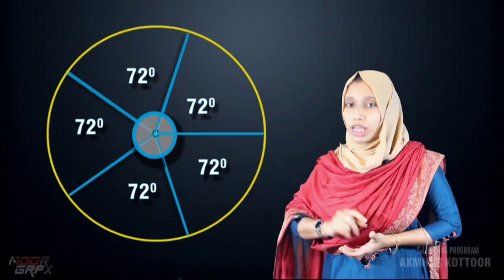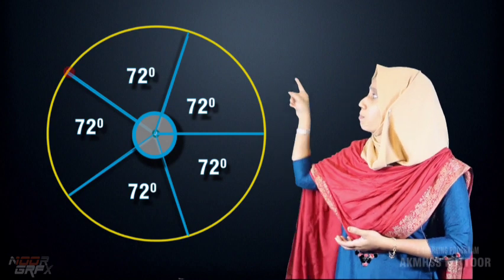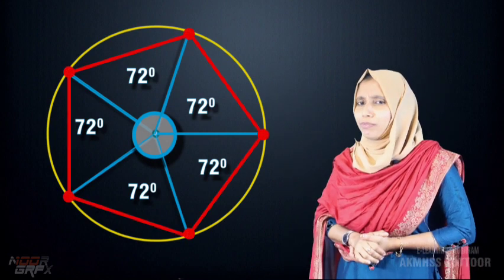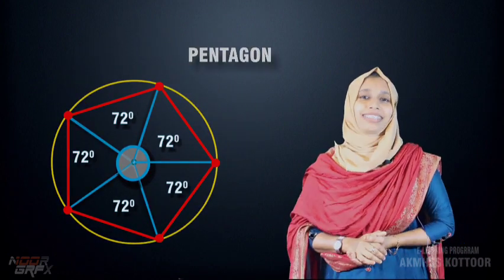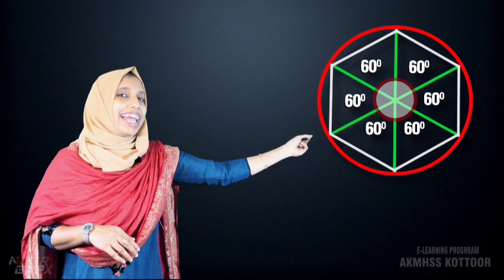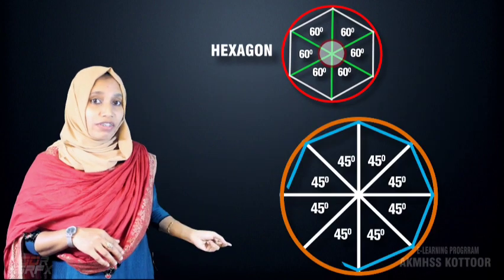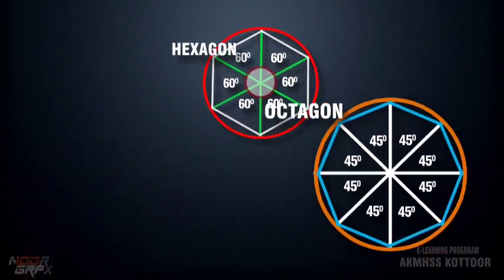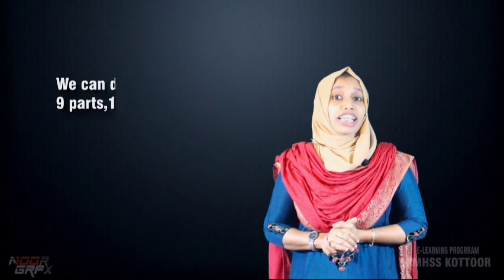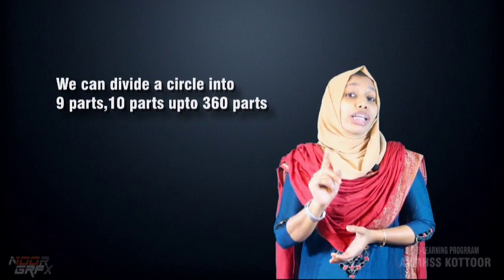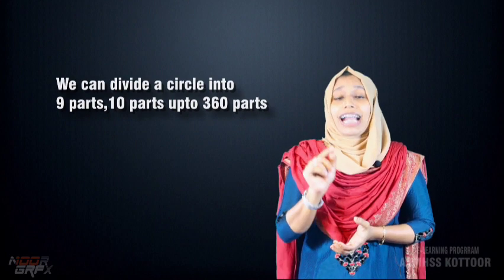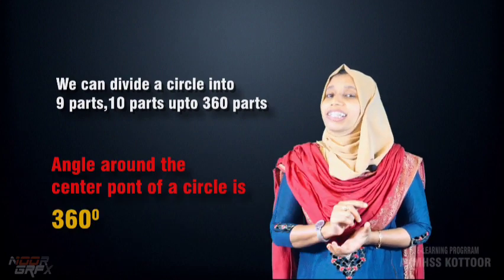We divided a circle into 5 equal parts. If I join these points, we get a shape — this is a regular pentagon. Similarly, joining the points of the 6-part division gives a hexagon, and the 8-part division gives an octagon. We can divide a circle into 9, 10 parts, up to 360 parts. The key thing to keep in mind is that the angle around the center point of a circle is 360 degrees.